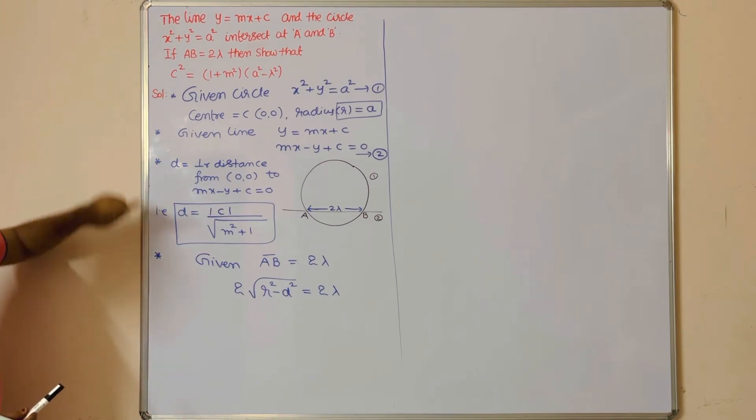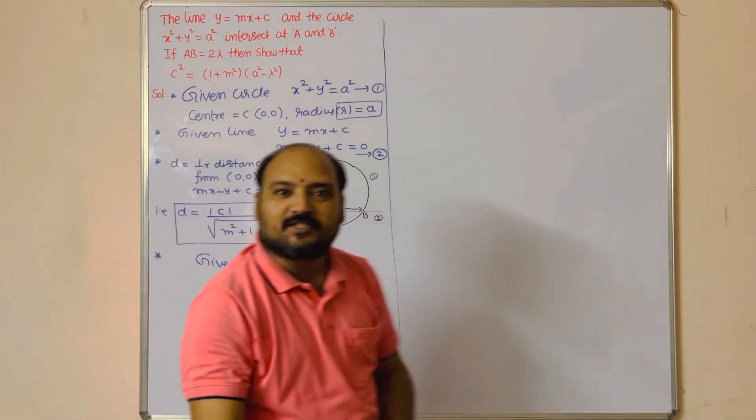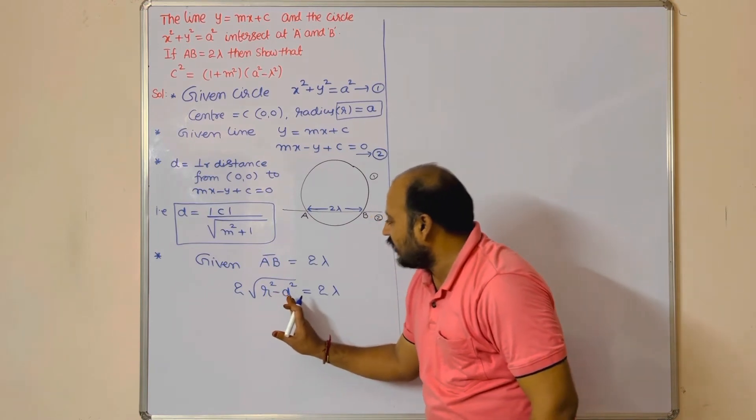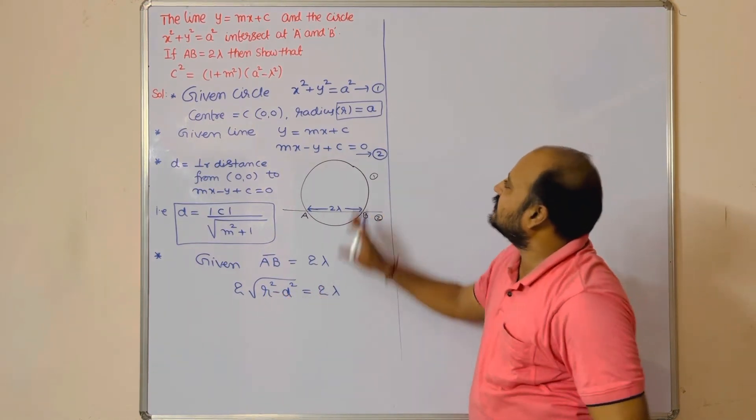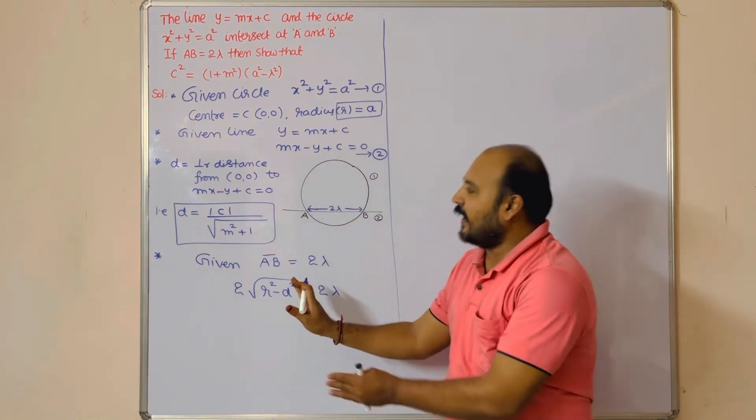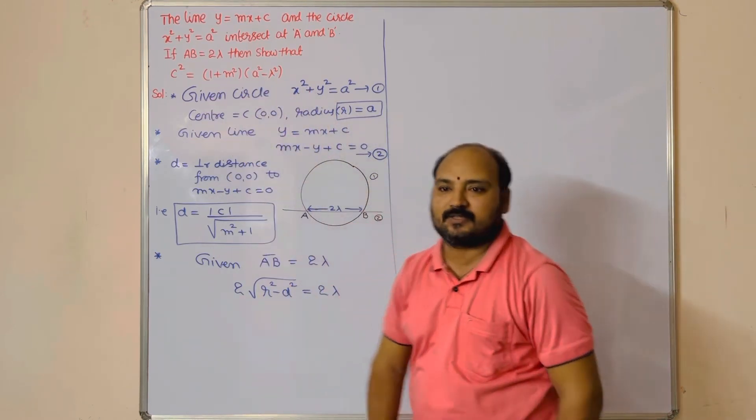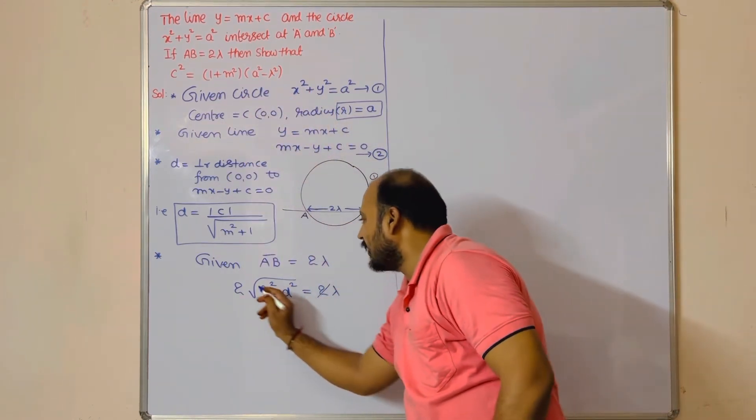From here to here, you will get 2 marks. Next step: substitute r value, d value in this. Substitute r value, d value, and simplify to get the answer for the 2 marks. Both sides, 2 gets cancelled.